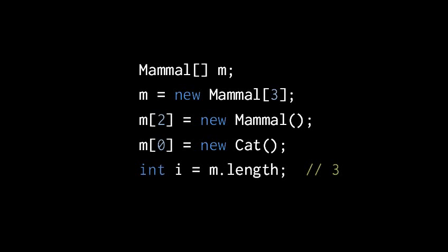Finally, every array object has an int field called length, which is the size of the array. So m.length here returns the int value three.